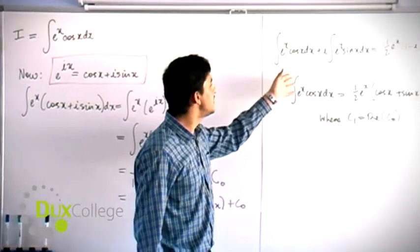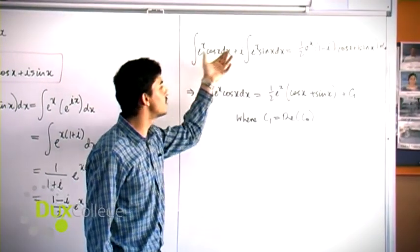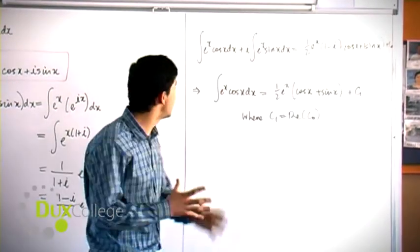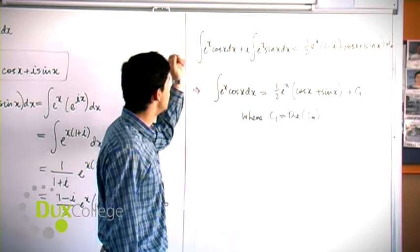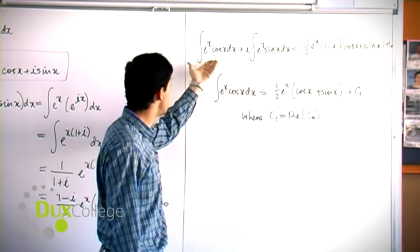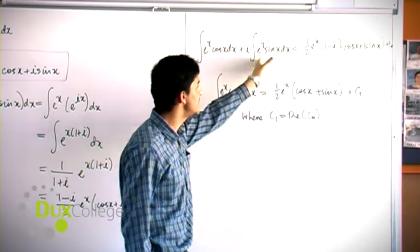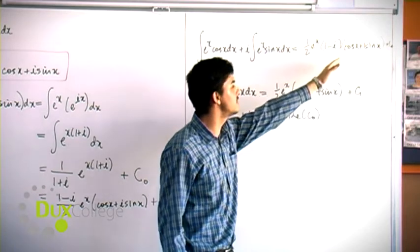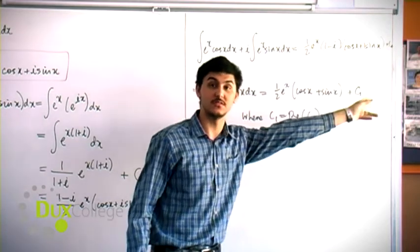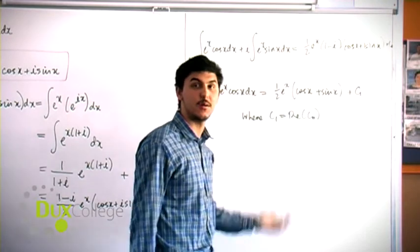Now we separate that previous integral into two parts to consider real and imaginary components. The integral of e^x(cos x + i sin x) becomes ∫e^x cos x dx + i∫e^x sin x dx. This equals (1/2)e^x(1-i)(cos x + i sin x) + C₀, simplifying the expression from the previous part.